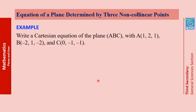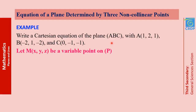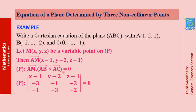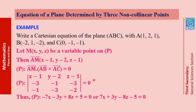Let's take one example. We need to write a Cartesian equation of the plane ABC — the plane passing through the three points A, B, and C. We choose a variable point M on P, find the components of vectors AM, AB, and AC, then write AM · (AB × AC) = 0. Writing the order-3 determinant equal to 0 and calculating, we get 7x + 3y − 8z − 5 = 0.